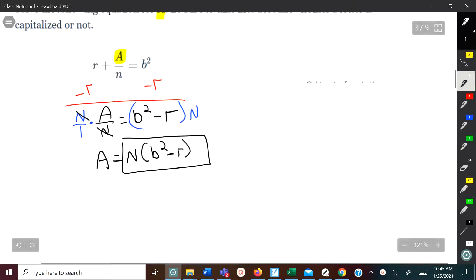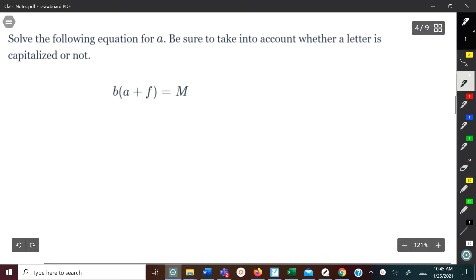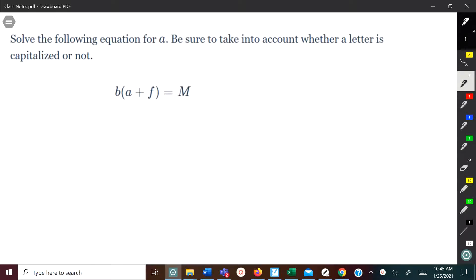Let's take a look at another example. So this is a multi-step, and what we want to do is solve for A. We want to get that A by itself. We've got to eliminate the B and the F from the A. Since the B is being multiplied times A plus F, we have to divide that B. We do the opposite. So we're going to divide B on both sides. The B's will cancel out, and that will leave us with A plus F equals M over B.